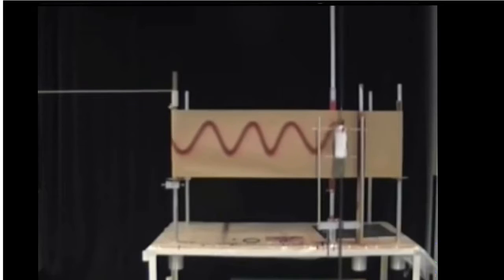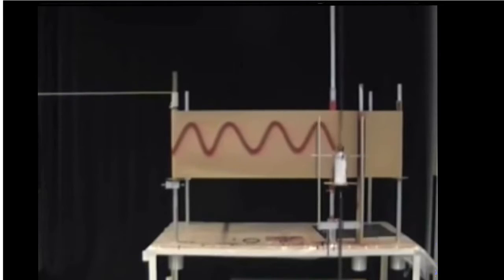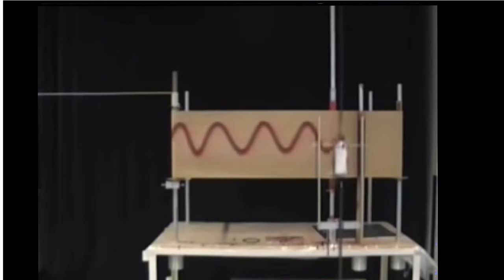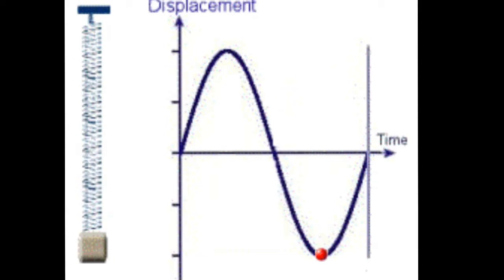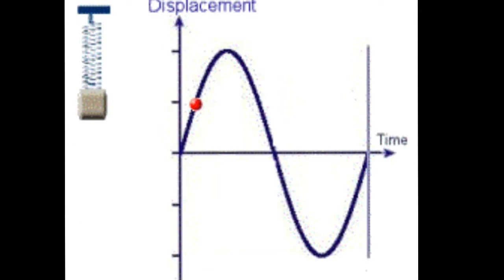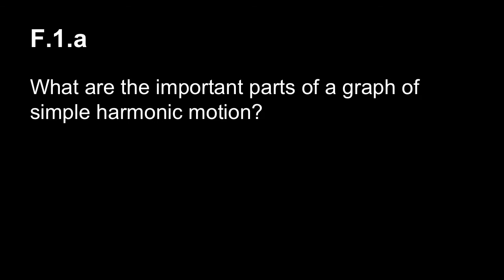Here's another example showing the mass going up and down and what the graph of that would look like. Part of this standard is that we need to know what the important parts of a graph of simple harmonic motion are, so we're going to take a look at a graph here.